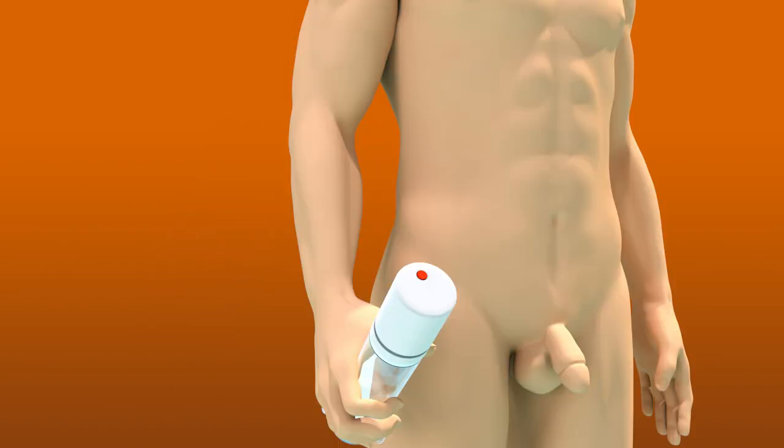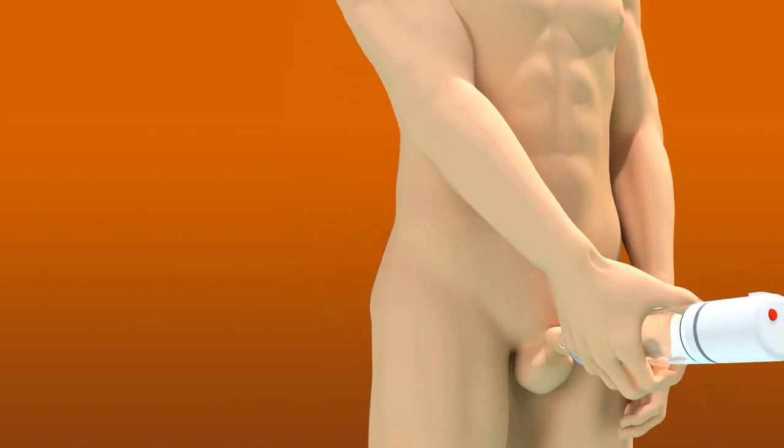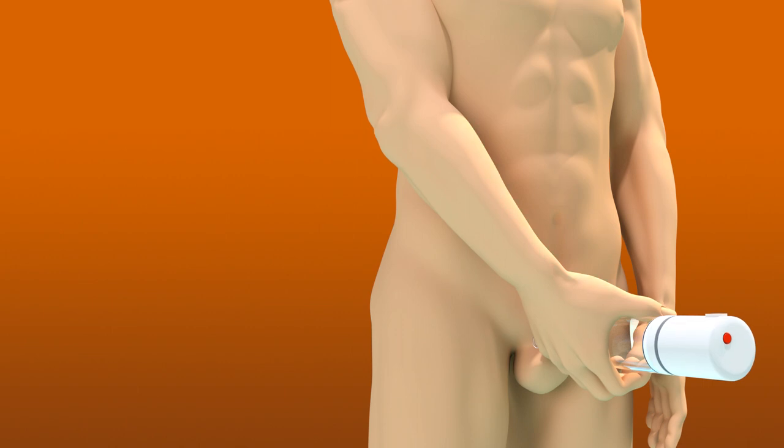Lubricate your penis and the pubic area. Insert penis in the open end of the cylinder. Make sure to press the cylinder firmly against the body to ensure a good seal.